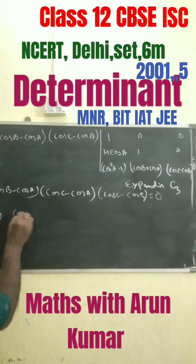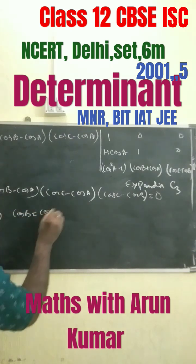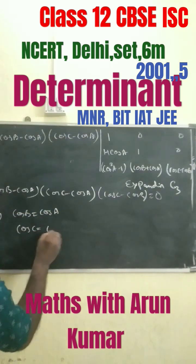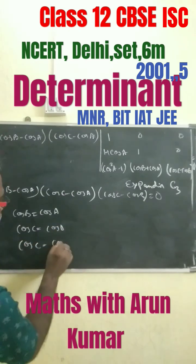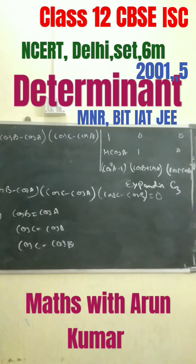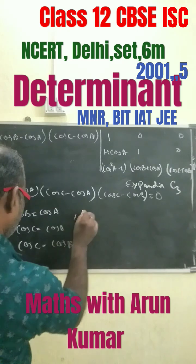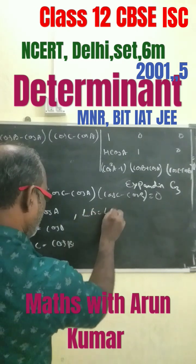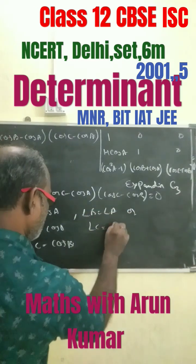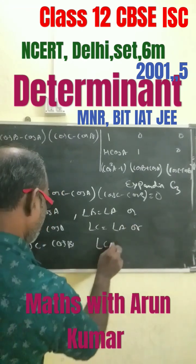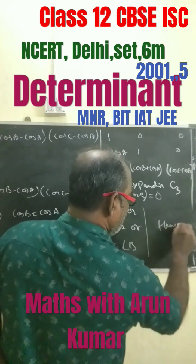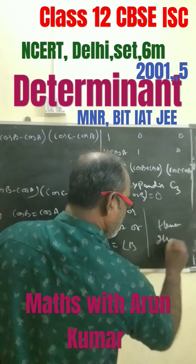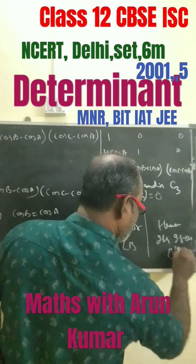This equals to 0. From here cos B equals to cos A, from here cos C equals to cos A, and from here cos C equals to cos B. Hence we get angle B equals to angle A, or angle C equals to angle A, or angle C equals to angle B. Hence it's an isosceles triangle.